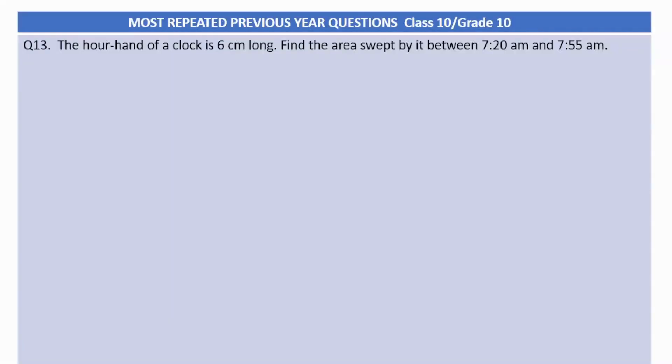Let's start. Let's start this question which belongs to area and sector formula. The hour hand of a clock is 6 cm long. Find the area swept by it between 7:20 am and 7:55 am.